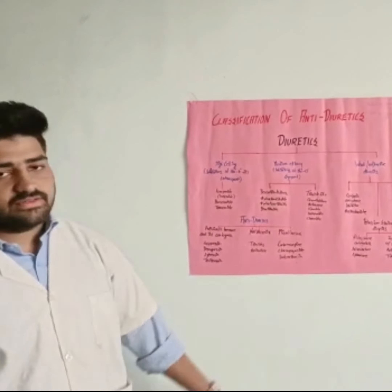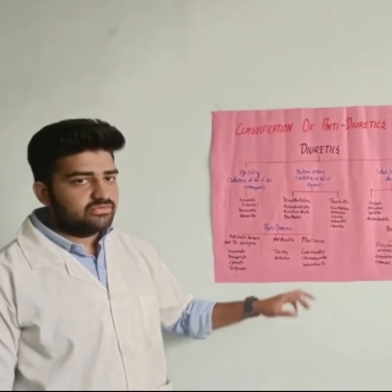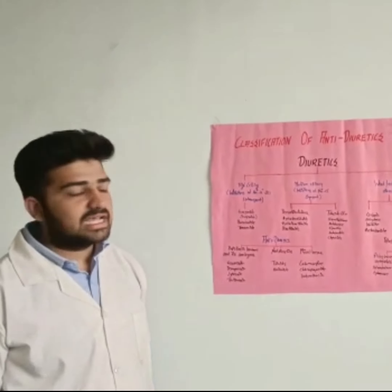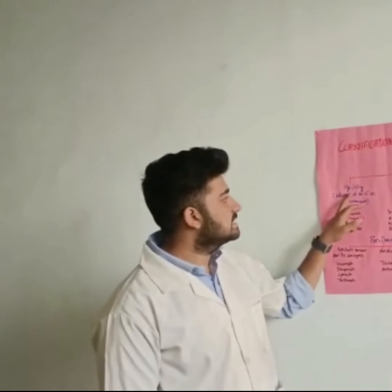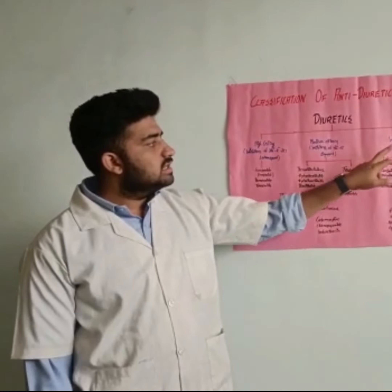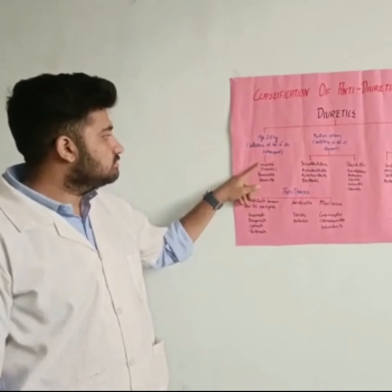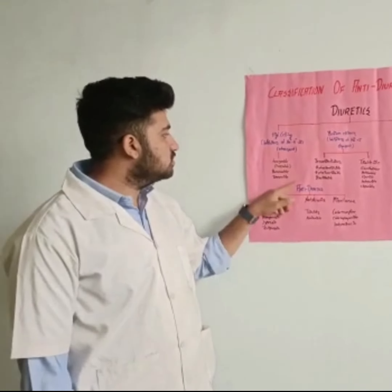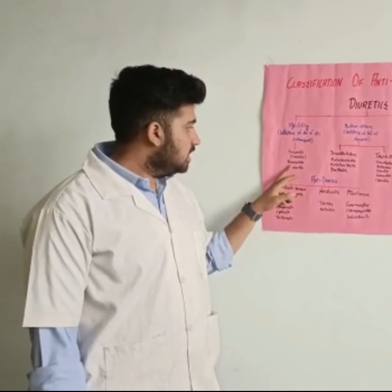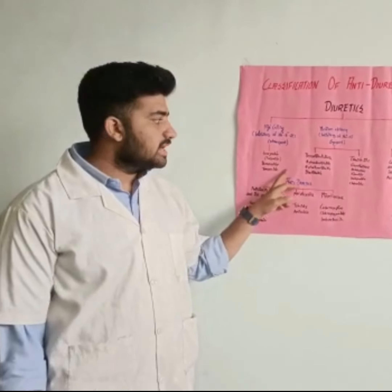Today our topic is classification of antidiuretics. Firstly, diuretics. Diuretics is classified into high ceiling, medium efficacy, weak, or adjuvant diuretics. High ceiling diuretics are furosemide, bumetanide, and torsemide.